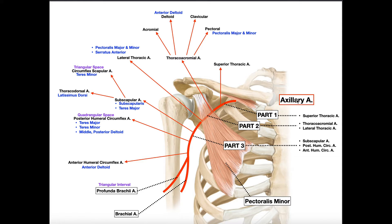The axillary artery is divided into three parts, and the division is based on the pectoralis minor muscle. As soon as the axillary artery reaches and goes underneath pectoralis minor, it changes from part one to part two. Part two goes deep to pectoralis minor, and as soon as it emerges from underneath it, it becomes part three. A nice mnemonic: the number of branches equals the part number — part one has one branch, part two has two branches, and part three has three branches.